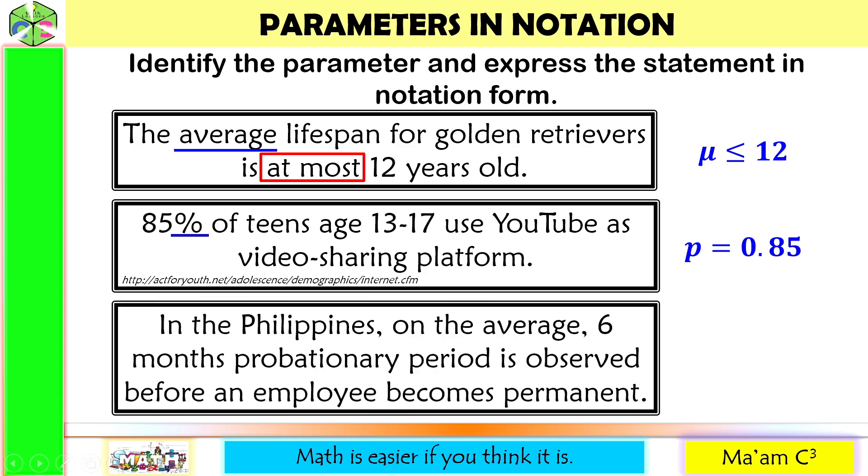Last one, in the Philippines, on the average, six months probationary period is observed before an employee becomes permanent. Once again, we are talking about average. And the symbol for parameter is mu. And it says here it is equal to six months.